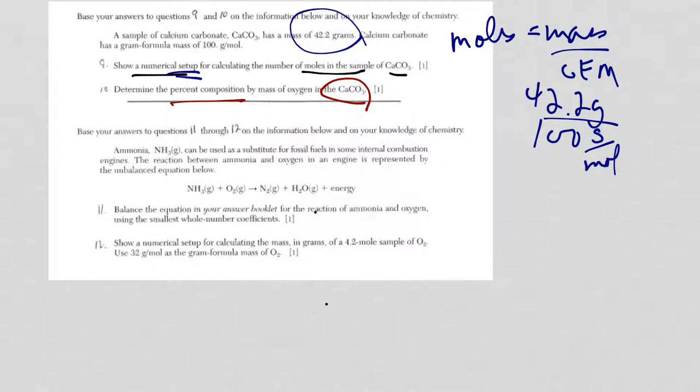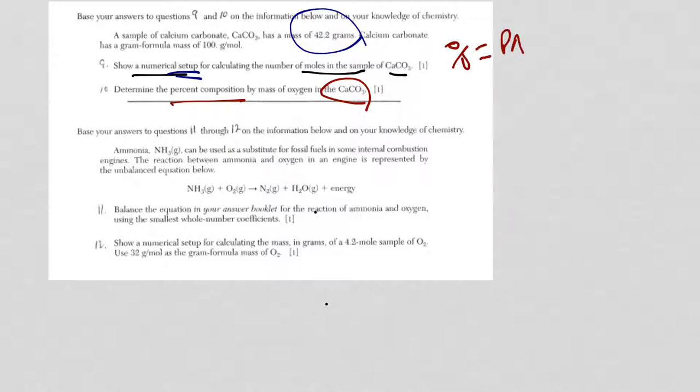My suggestion is to write the equation first. So what do we have? We have percent is equal to the part over the whole thing times 100.